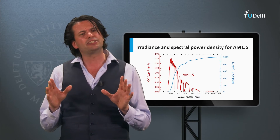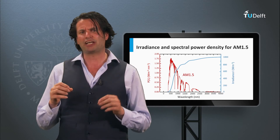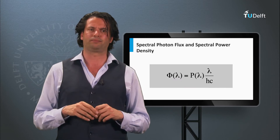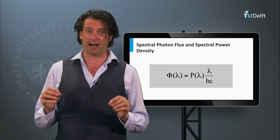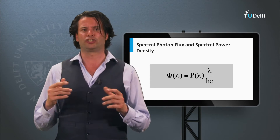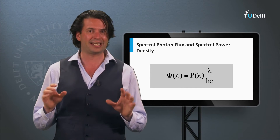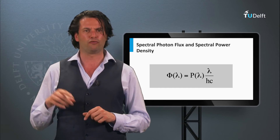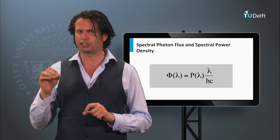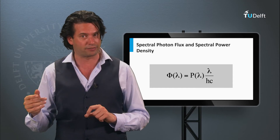The irradiance tells us something about power per unit area. However, we can also consider light as a number of photons. The photon flux phi is the amount of photons per time per area. Similar to irradiance, the photon flux does not contain any spectral information. For that we define the spectral photon flux, which is the amount of photons per unit area, per time, per wavelength range.